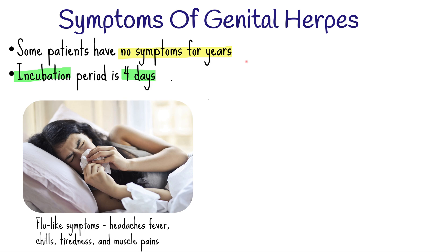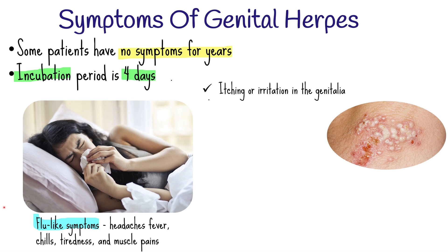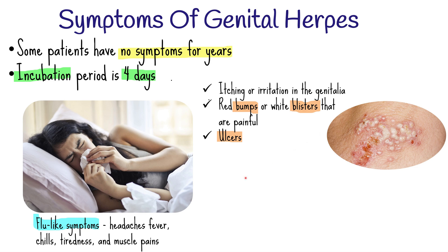When present, symptoms of genital herpes include flu-like symptoms like headaches, fever, chills, tiredness, and muscle pains; itching or irritation in the genitalia; small red bumps or tiny white blisters or sores on the genital area that are painful when they break open; ulcers that form when blisters rupture; swollen lymph nodes; and dysuria, which is painful urination.